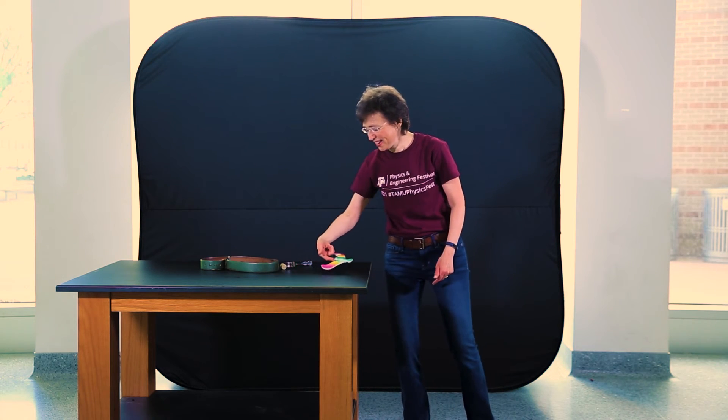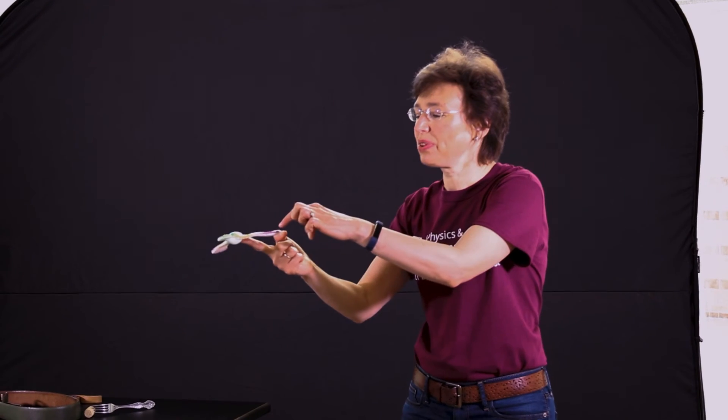Some of you have this toy at home. The principle is the same. This flying bird has wide wings with heavy weights. That's how you balance it. That's how you move the center of gravity under your finger.